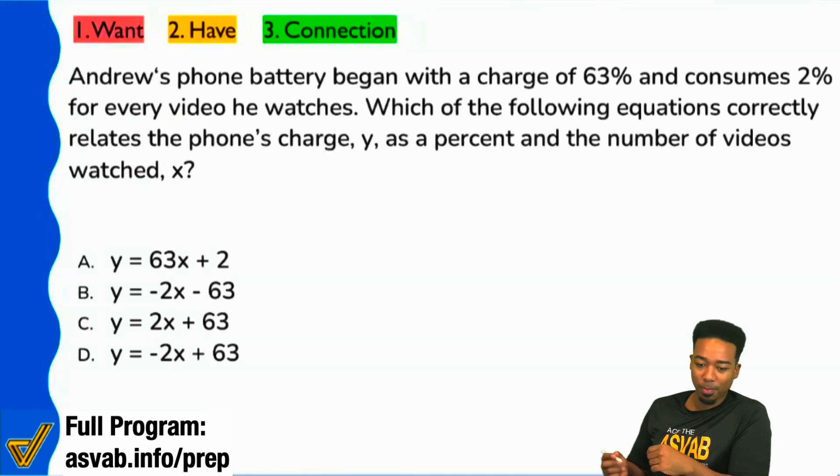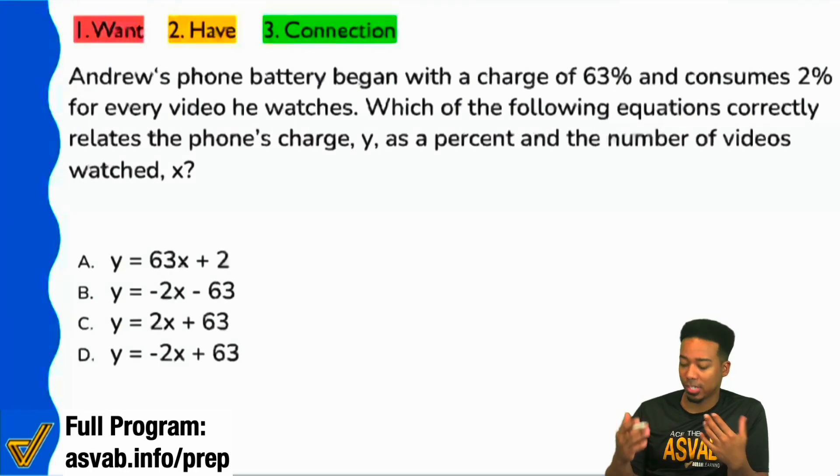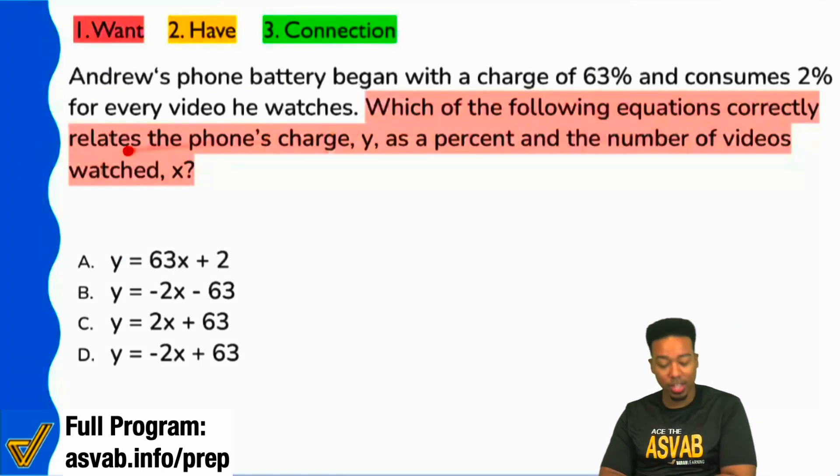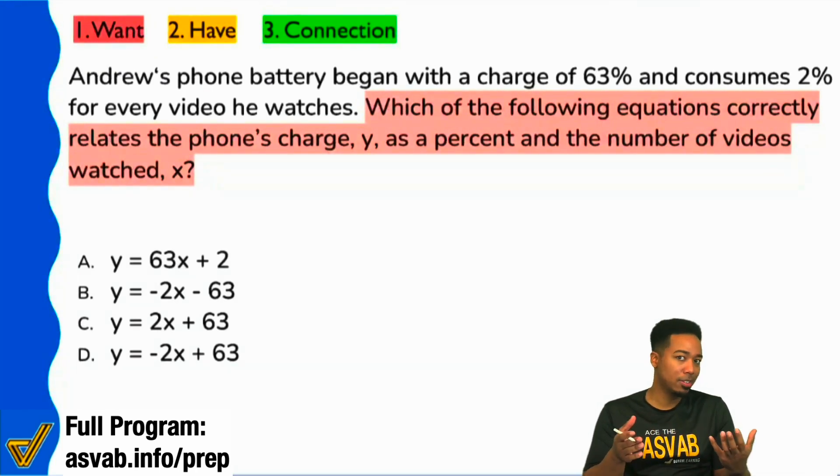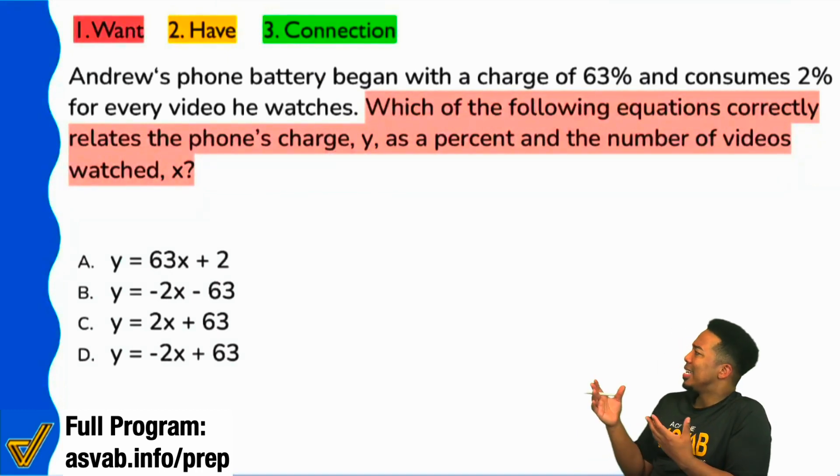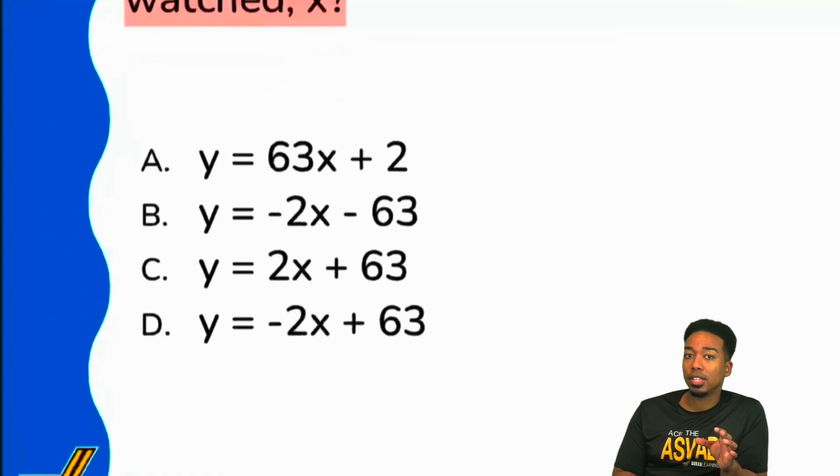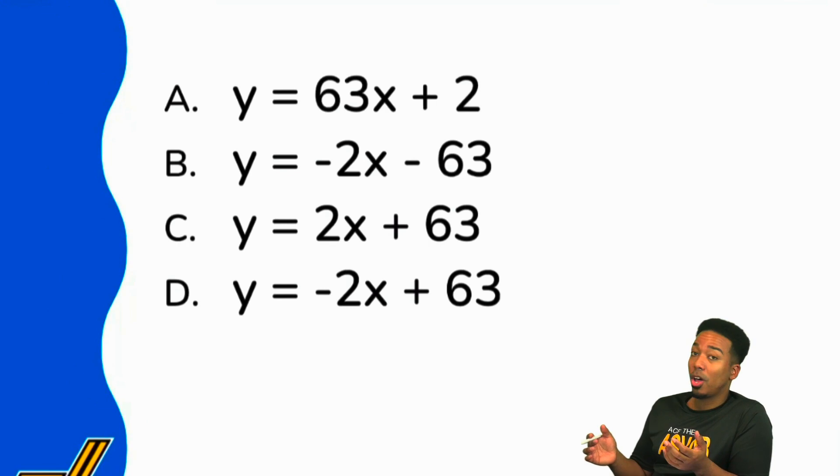Let's get into this last one. The question reads, first things first, read the question sentence. Which of the following equations correctly relates the phone's charge Y as a percent and the number of videos watched, X? This type of question might feel a little vague, and if you're not used to these types of questions, this might give you pause. But if you take a look at the answer choices right over here, these are all written in the same exact way, and these are written almost like a formula.